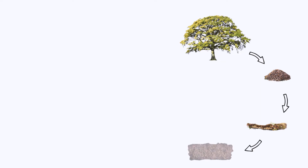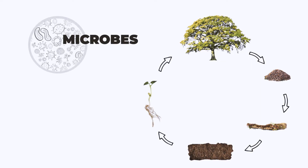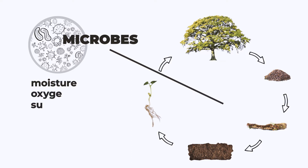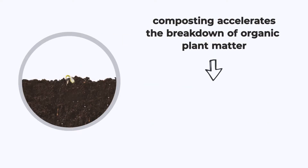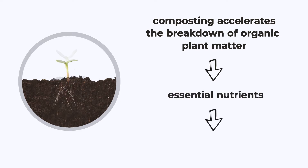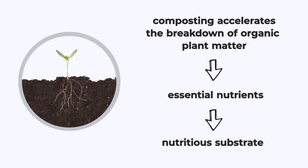Composting is the natural process of recycling organic matter. It occurs through microbes in the soil that eat the material, but other factors like moisture, oxygen, sunlight, and temperature set up the right environment for this process to occur.